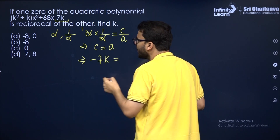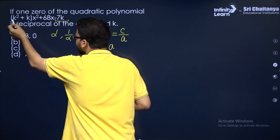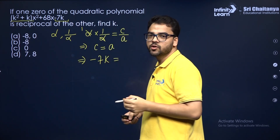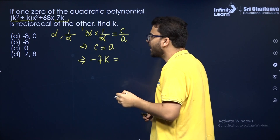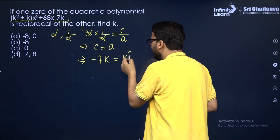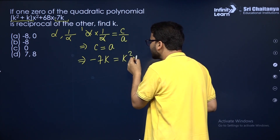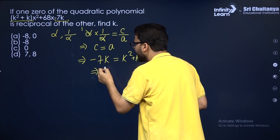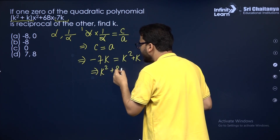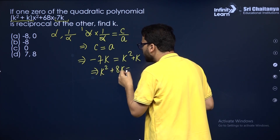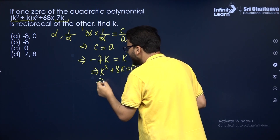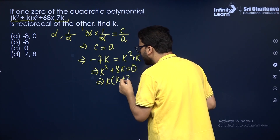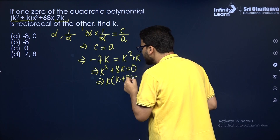And a is the coefficient of x², which is k² + k. So we have −7k = k² + k. Simplifying gives k² + 8k = 0. Taking k as common, we get k(k + 8) = 0, so k = 0 or k = −8.